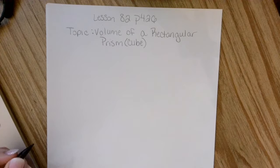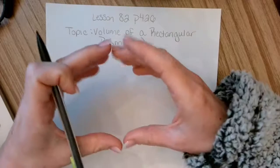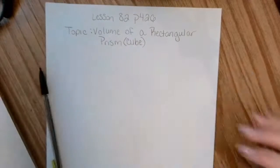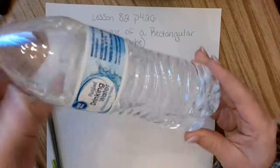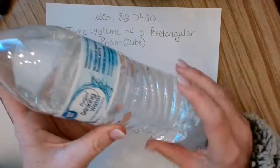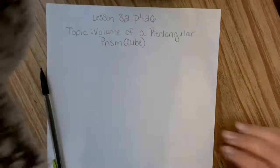So volume is talking about how much stuff could fit in a cube. So for example, if I had a bottle of water, the amount of water that can fit inside of this bottle would be the volume. So that's what we're going to talk about today.